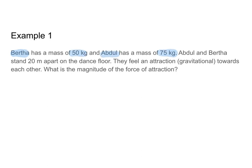Bertha has a mass of 50 kilograms and Abdul has a mass of 75 kilograms. Abdul and Bertha stand 20 meters apart on the dance floor. They feel a gravitational attraction toward each other. What is the magnitude of the force of attraction? Let's start by listing out our givens and unknowns. Bertha's mass MB is 50 kilograms, Abdul's mass is 75 kilograms, and the distance R from Bertha to Abdul is 20 meters. We are trying to find the magnitude of the force Fg.